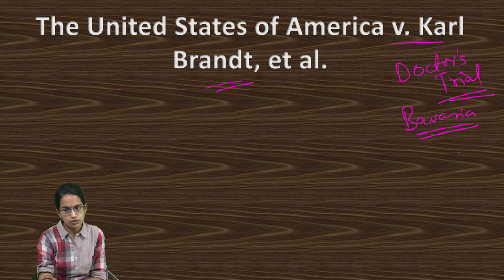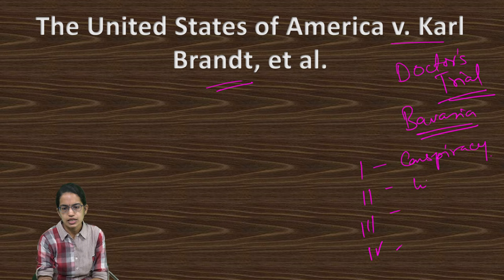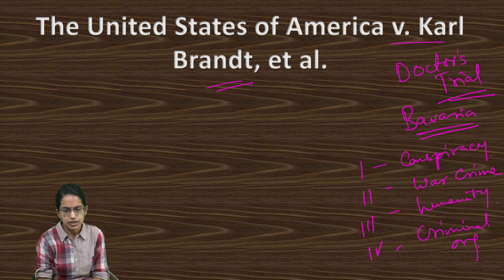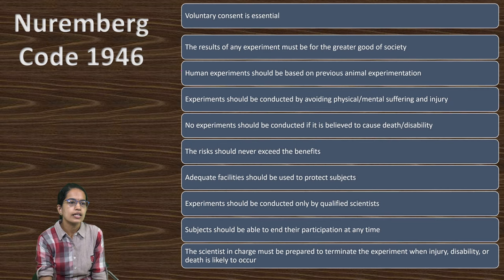There were four counts taken into account against the defendants. The first was common design or conspiracy. The second was war crime. The third was crime against humanity. And the fourth was membership in any criminal organization. Based on these four counts, the code of 1946 was laid down.